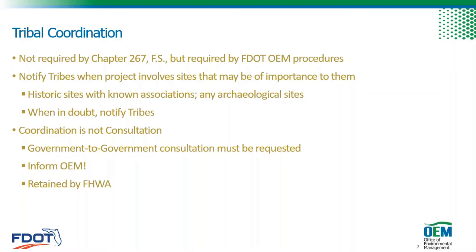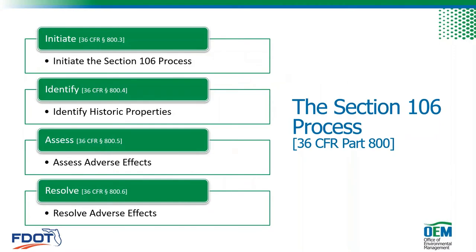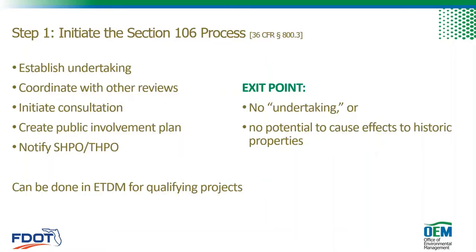I'm going to breeze through the four-step process because the CRM professionals you hire should have a solid handle on it, but I will stop and highlight a few key actions that, when done properly, can save you a lot of time and effort. The four steps of the Section 106 process are: Initiate, Identify, Assess, and Resolve. Two key points to remember: first, consultation with SHIPO — if it's a federal project — or DHR — if it's state-funded only — and public involvement are both required at every step. Second, the process can be concluded at any step depending on the specifics of the undertaking.